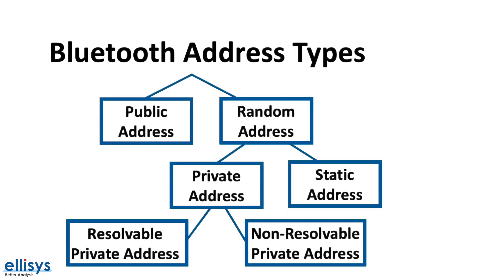Here's a diagram summarizing the different types of Bluetooth addresses and how they relate to each other. There are two main types: a public address and a random address. A random address could either be a static or a private address, and in the case of a private address it's either resolvable or non-resolvable. So in the end there are four types of addresses: a public address, a static address, a resolvable private address, or a non-resolvable private address.